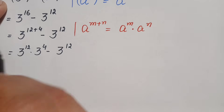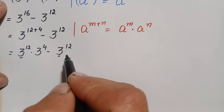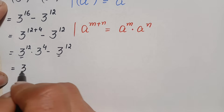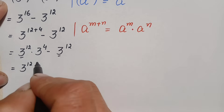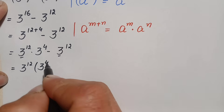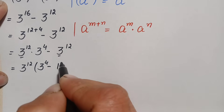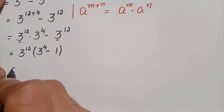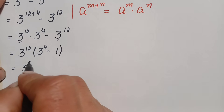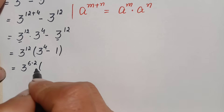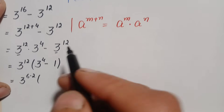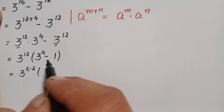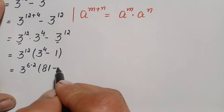Looking at both terms, 3 to the power 12 is common. Taking 3 to the power 12 out as a common factor, we are left with 3 to the power 4 minus 1. Now the value of 3 to the power 4 is simply 81, so replacing it we get 81 minus 1, which equals 80.